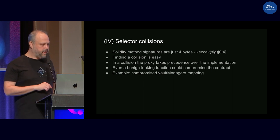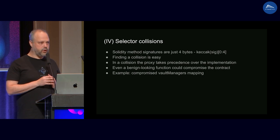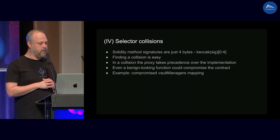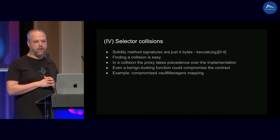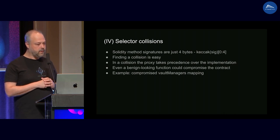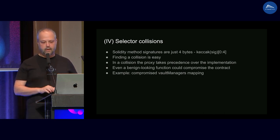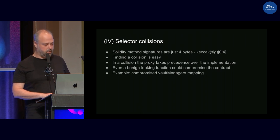Another interesting case is selector collisions. Solidity encodes functions by hashing the function signature and using the first four bytes. Four bytes is not a lot, so it's easy to find a collision. When you have a collision between a proxy and an implementation, the proxy takes precedence. This allows you to hide any function and cover it with a different function — and it doesn't have to look suspicious; it can look very harmless.